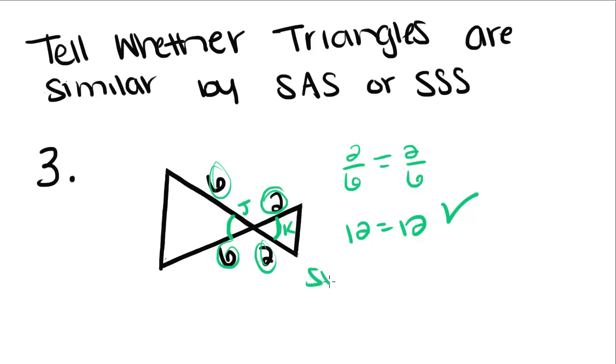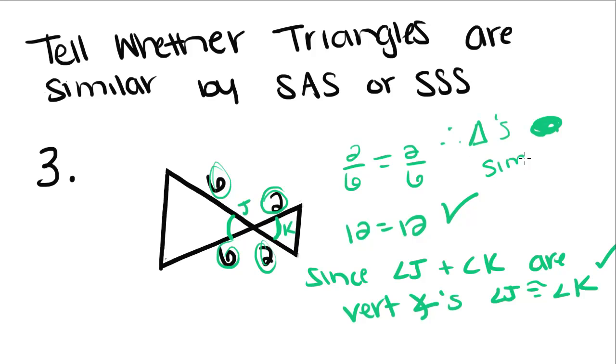So since angle J and angle K are vertical angles, angle J is congruent to angle K. So now we can say that these triangles are similar by side-angle-side.